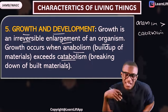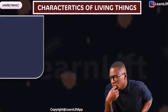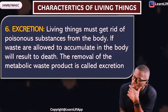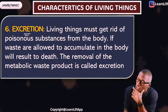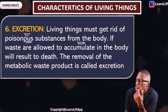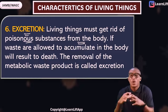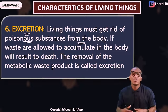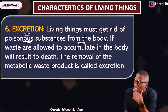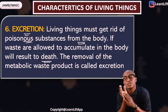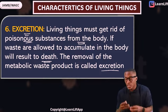Number six is excretion. All living things must remove poisonous substances from the body. The process of removing poisonous substances from the body is called excretion. If you accumulate waste products and don't excrete them, it can result in poison or toxins in the body and can lead to death. Therefore, waste products must be excreted — when you eat food, the part that is not needed must be removed.